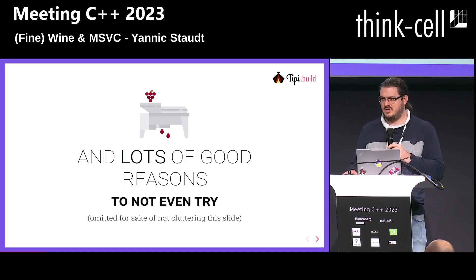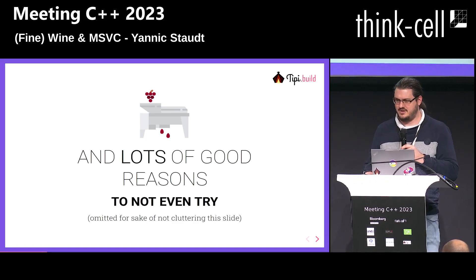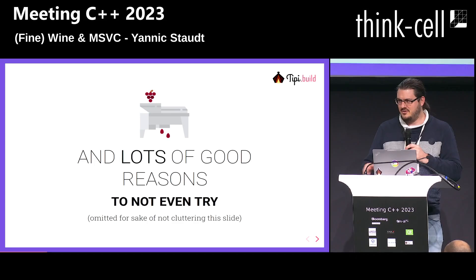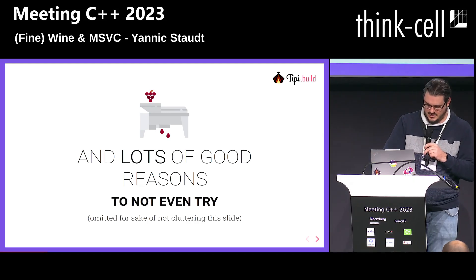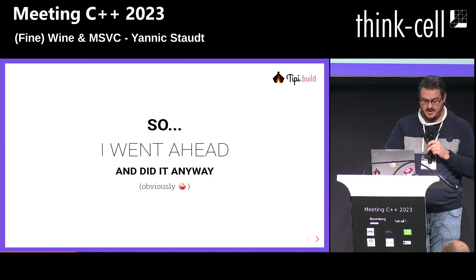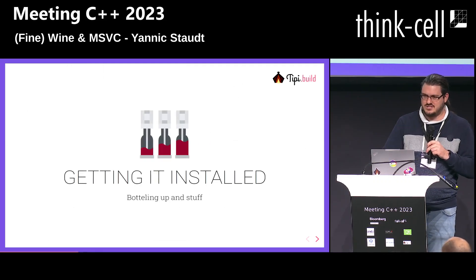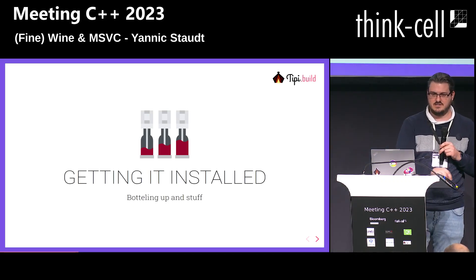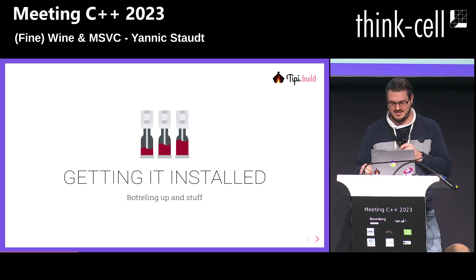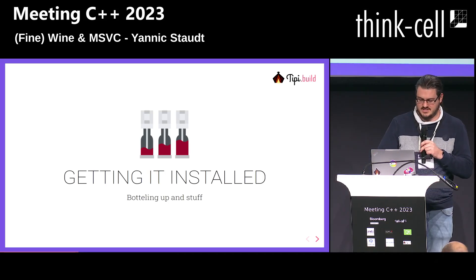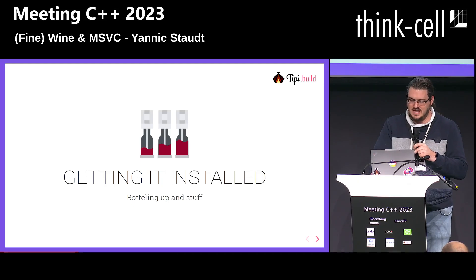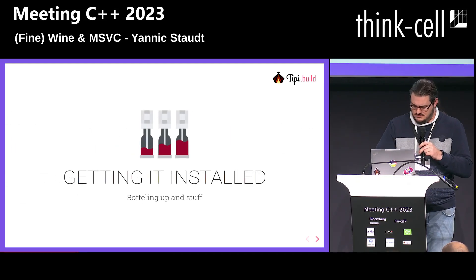We didn't go into all the details of why it's a really bad idea, but we did it anyway. The first interesting challenge was how to get an MSVC installation on a system other than Windows. It turns out it's probably a lost cause to try to run the official installer under Wine. I looked at the crash dumps — I stopped after the third or fourth attempt.